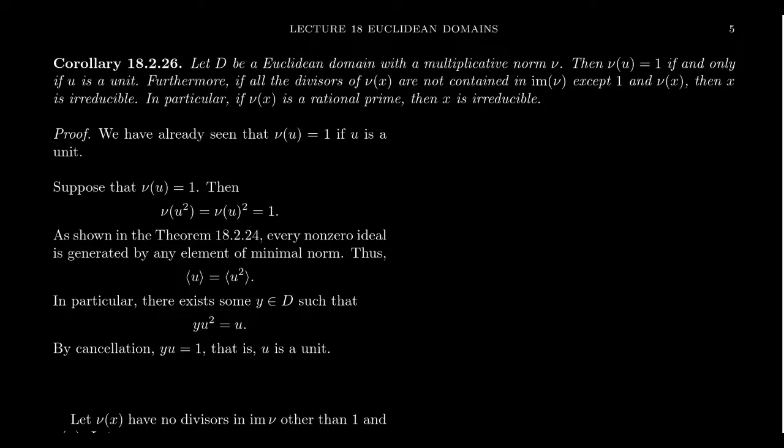So we can use the norm to locate units, and we can use the norm to locate irreducible elements. This is the most effective setting, when you have this multiplicative Euclidean norm, such as the integers, when you can use absolute value as your norm. That's what we're trying to base this upon. We've already seen previously that if the norm of an element is equal to one, that is, if the norm of your element is equal to the norm of one, which we can assume is one, then you're going to have to be a unit. We've proven that previously. So it's the reverse direction that we're considering right now.